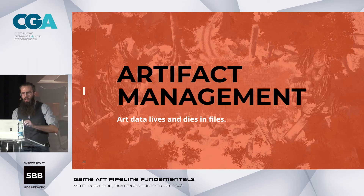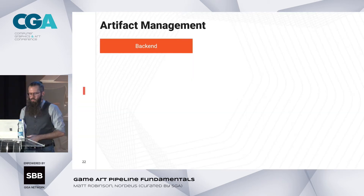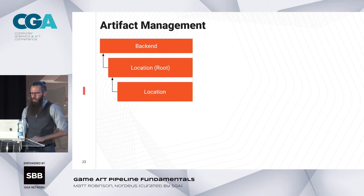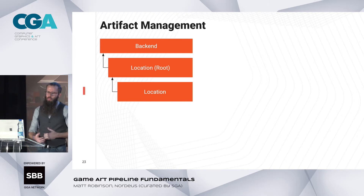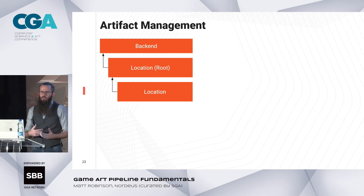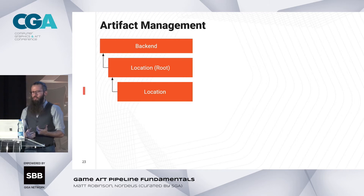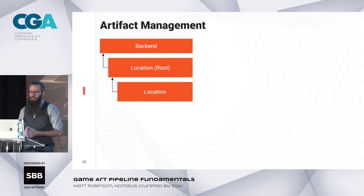We've got rocks and a structure, but we don't actually have any content yet. Art data lives and dies in files, so it's super important to figure out how to deal with this. We start with a backend — something like a Perforce depot, a Git repo, Google Drive, or a shared drive. Below that, we have locations: one references the backend, the other references a root. This builds a hierarchical structure for figuring out where stuff will live. To find the final path, you walk up the chain, add all the parts, and you're done. A location can actually have multiple directories, abstracting the idea of a directory into something we can talk about more easily.